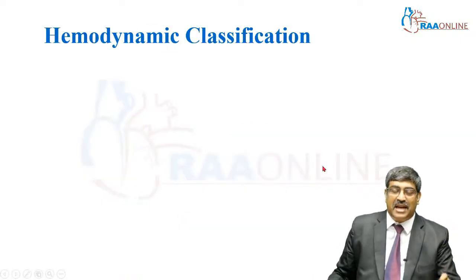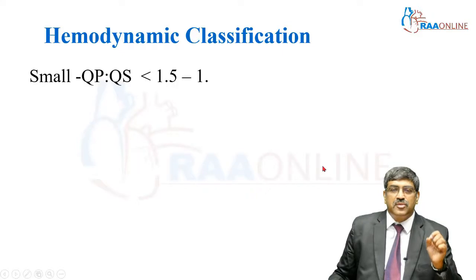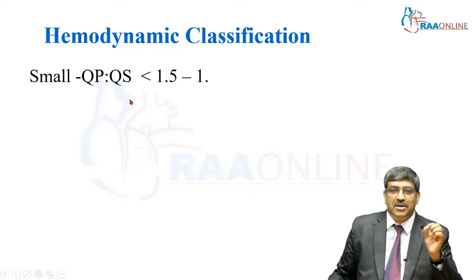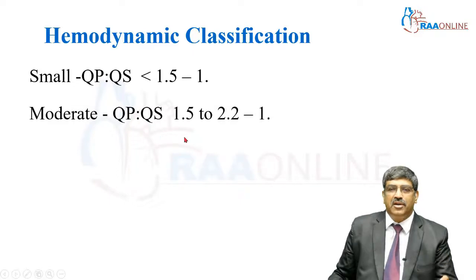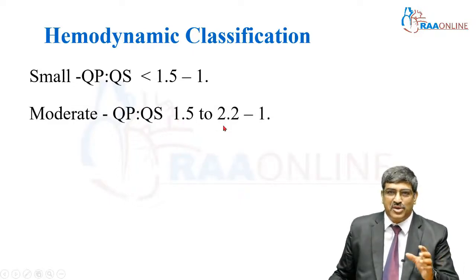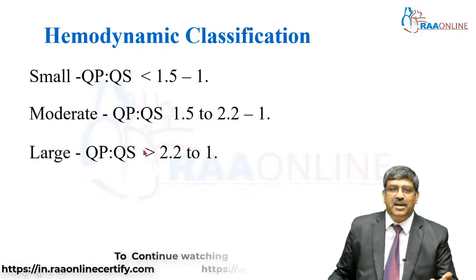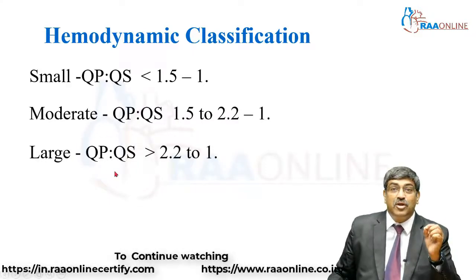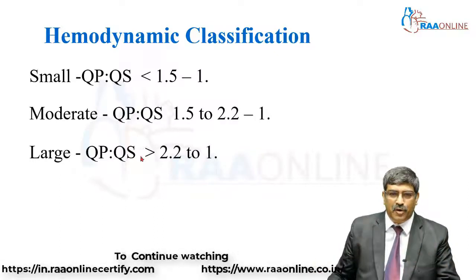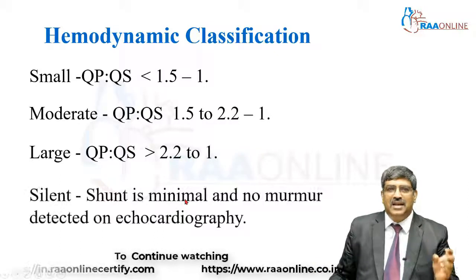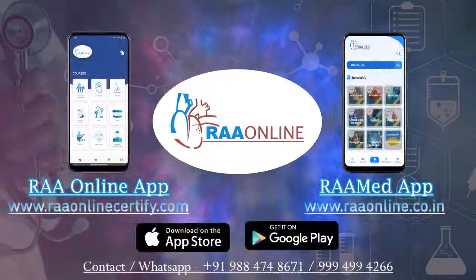Coming to hemodynamic classification: small PDA is when the QP:QS ratio is less than 1.5:1, meaning pulmonary blood flow is slightly greater than aortic blood flow. Moderate is when the QP:QS ratio is 1.5 to 2.2:1. Large PDA is when QP:QS is greater than 2.2:1, meaning pulmonary blood flow is almost twice that of aortic blood flow.